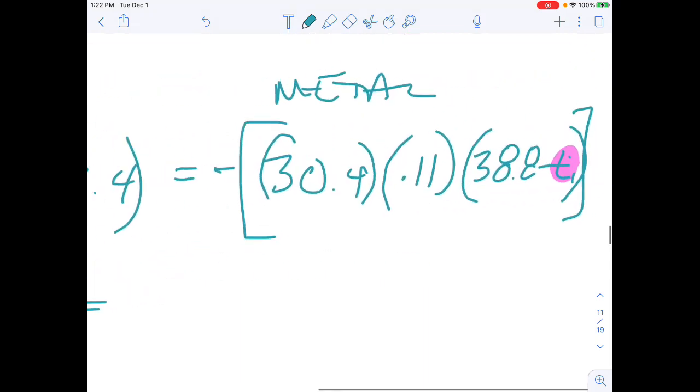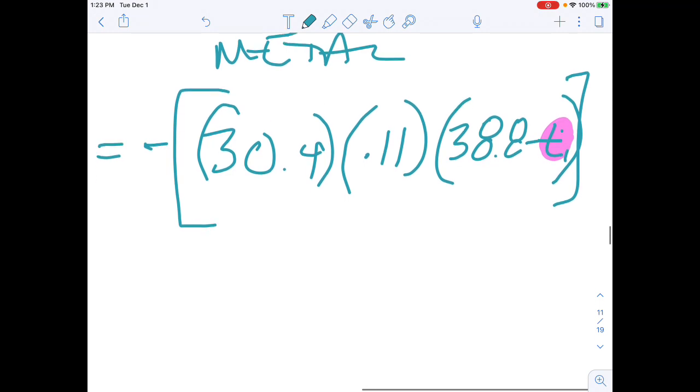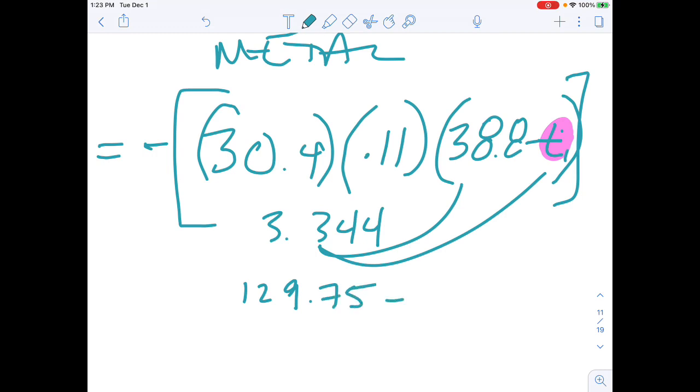I can flip over to this side. I'm going to multiply 30.4 times 0.11. That's going to give me 3.344, and then I'm going to distribute that in. So times 38.8 gives me 129.7 and change, minus 3.344 ti. Then I'm also going to distribute that negative in here. And that's all I can do on that side.